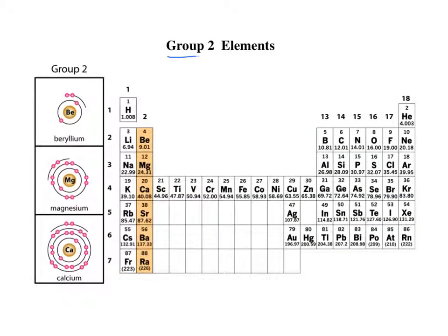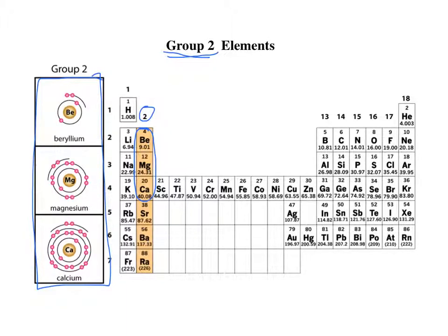Looking at groups: group 2 elements have two valence electrons. Going from beryllium to calcium, what they all have in common is those two valence electrons — that's why they're a family and behave in very similar ways. Beryllium is in the second period because its valence electrons are in the second shell, and magnesium is in the third period because its two valence electrons are in the third energy level.